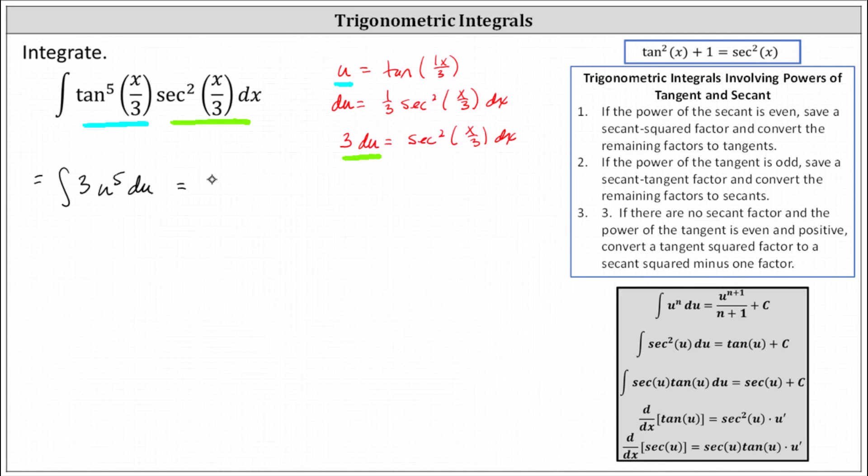Let's go ahead and factor out the 3. We have 3 times the integral of u to the fifth du. Integrating with respect to u, we have 3 times u to the sixth divided by 6, or one sixth times u to the sixth plus c. 3 times one sixth is one half, giving us one half u to the sixth plus c.